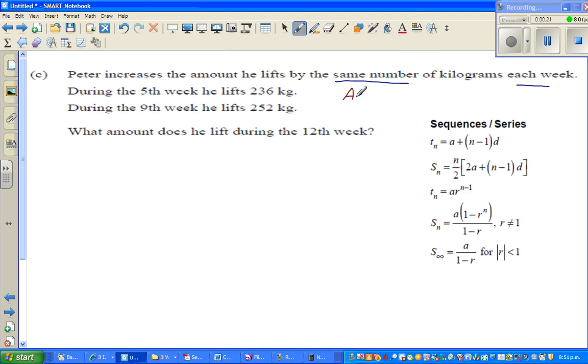This is telling you that this is an arithmetic sequence. In an arithmetic sequence, each term increases by the same amount. So this is a clear indication that we're talking about arithmetic sequence. During the fifth week he lifts 236 kg, and in the ninth week he lifts 252 kg. What amount does he lift in the 12th week?